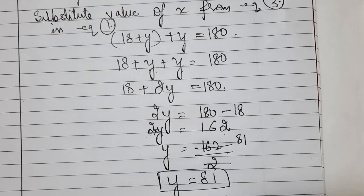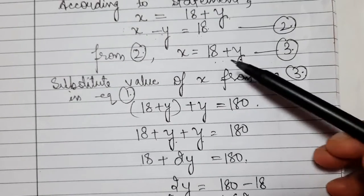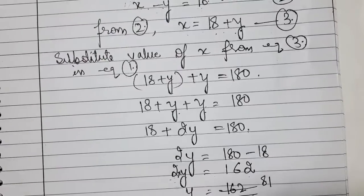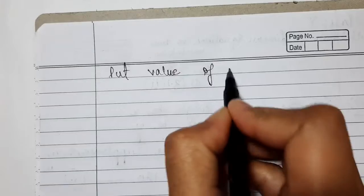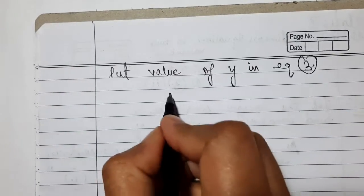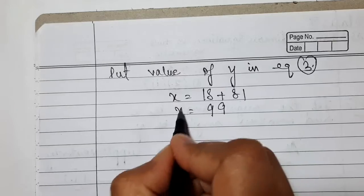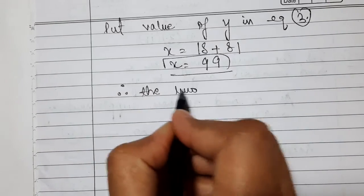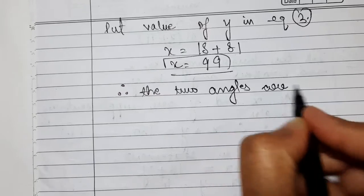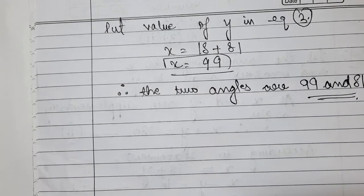So the smaller angle y is 81 degrees. Now using equation 3, x equals 18 plus y. Putting the value of y as 81, x equals 18 plus 81, which equals 99. So x equals 99 degrees. Therefore, the two angles are 99 degrees and 81 degrees, and with this the second part is complete.